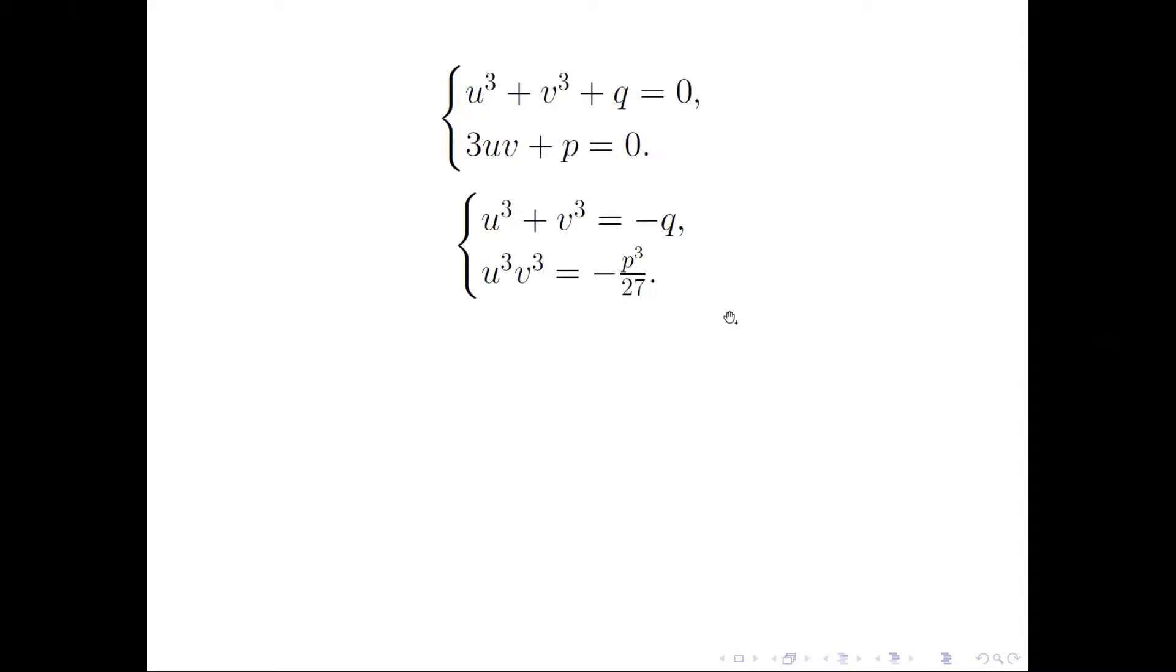We have u cubed v cubed equals negative p cubed over 27. Now look at these two equations. We have u cubed plus v cubed equals something and u cubed times v cubed equals something. Naturally, we can use Vieta's formula. u cubed and v cubed are the roots of a quadratic equation.